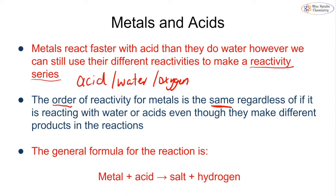If we look at the reaction of a metal and an acid, we are forming a salt — which we'll talk about more in a moment — and we're still making hydrogen gas as well. The main difference here is that we're not making a metal hydroxide this time; we're making a salt.